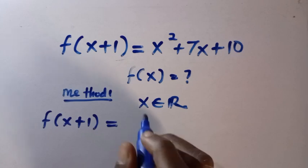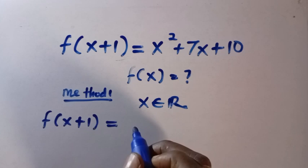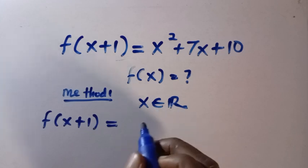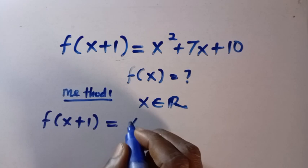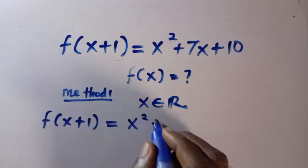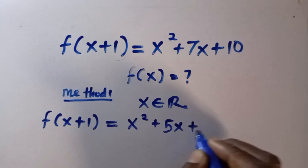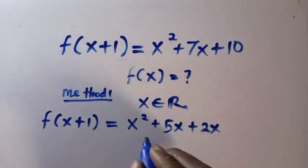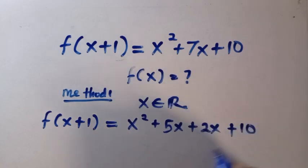Then we have to factorize it. So we look for two numbers as the sum will be 7 and the product will be 10. And the two numbers are 5 and 2. So we have this as x squared plus 5x plus 2x, so this gives us 7x, then plus 10.